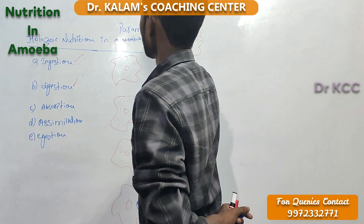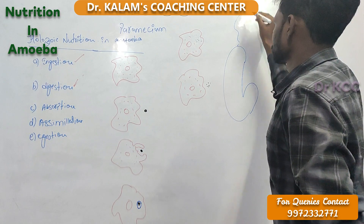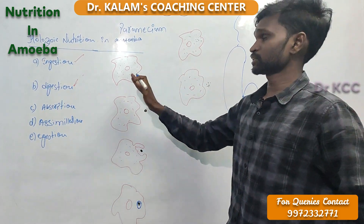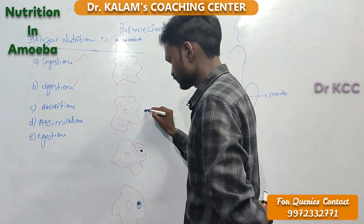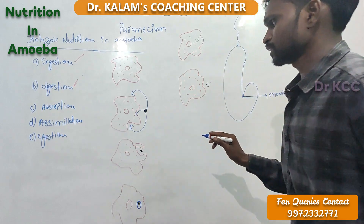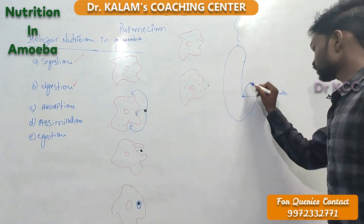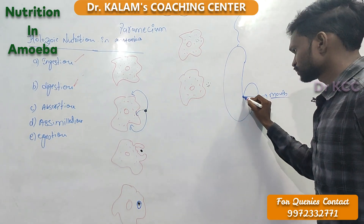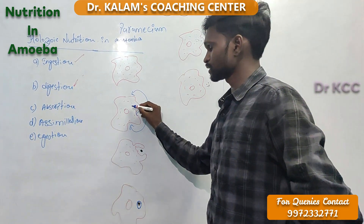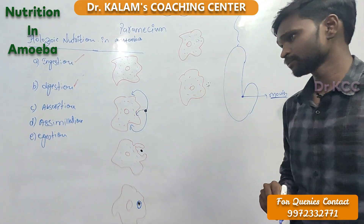If they ask about paramecia, you don't need to worry — we've only studied amoeba here. The main difference: paramecia has a slipper-like structure and has a mouth. The basic difference between nutrition in amoeba and paramecia is that in amoeba, food can enter through anywhere on the cell membrane — ingestion can take place at any point. But in paramecia, ingestion takes place only through a specific site — the mouth. Apart from that, the remaining steps — ingestion, digestion, absorption, assimilation, and egestion — are all the same.